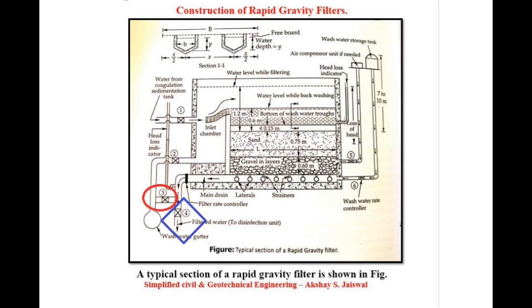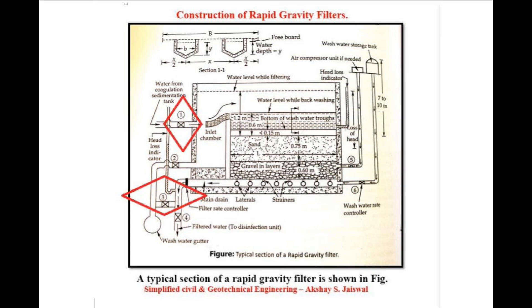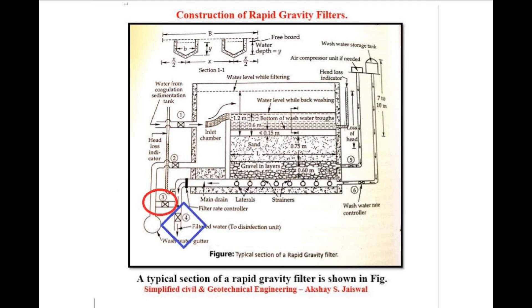Ultimately, valve 3 is closed and valve 4 is opened to get the filtered supplies again. Washing poori ho jaane ke baad valve 2 aur 6 band kiye jaate hain aur valve 1 aur 3 ko khola jata hai. Yeh valve number 1 se inlet supply se paani ko restore karne ke kaam aata hai. Lekin shurvaat mein filter kiya hua paani use nahi kiya jata aur kuch der tak usko valve 3 se baha diya jata hai, taaki sand ke gaps mein maujood mela paani bahar nikaala ja sake. Iske baad valve number 3 ko band karke dobara filter kiya hua paani collect karne ke liye valve number 4 ko khola jata hai.